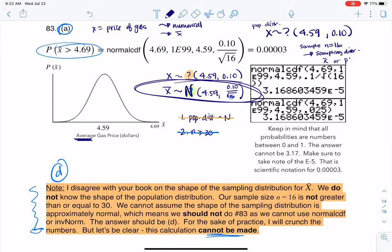So if there had been an N here, which again I disagree with, there's not, I would have gone normal CDF, low, high, mean, standard error, and I would have gotten this number of 0.0003, which is almost zero.